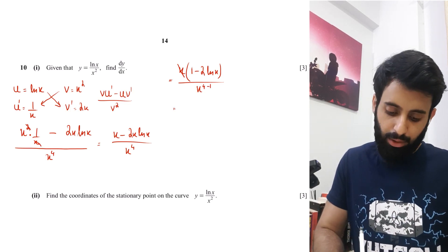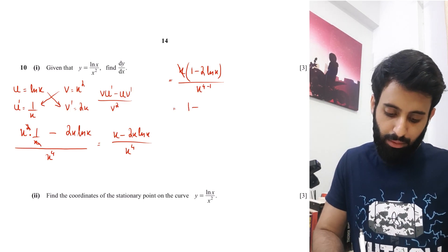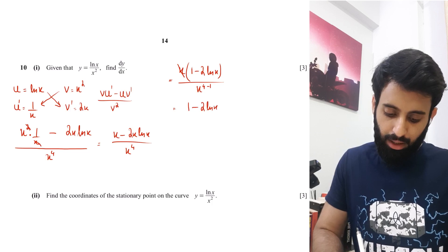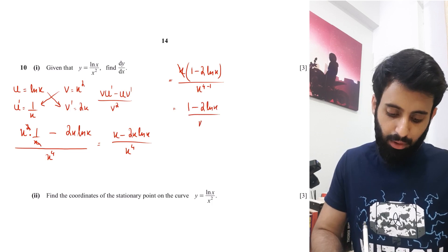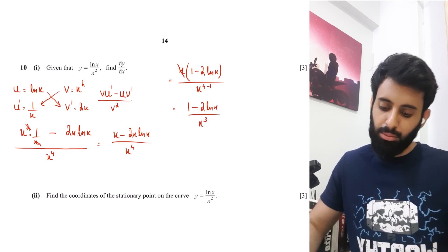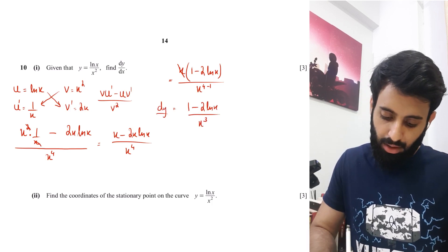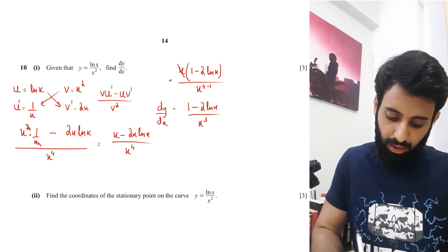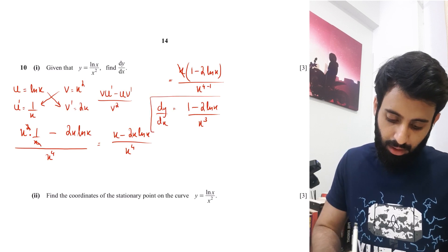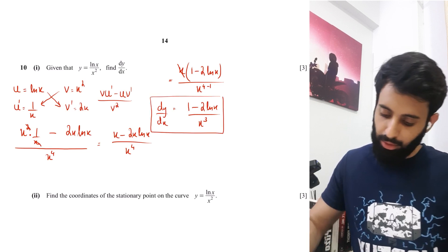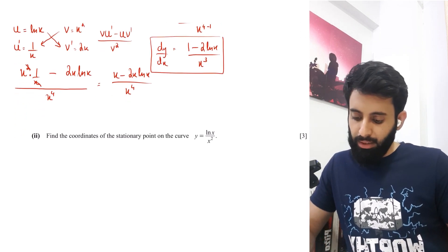Factoring x from the numerator: x(1 minus 2lnx) / x^4. The x cancels, reducing the denominator power by 1 to x^3. So dy/dx = (1 minus 2lnx) / x^3.